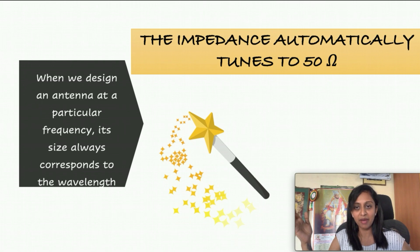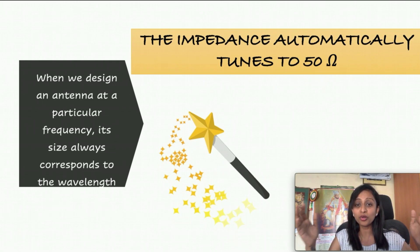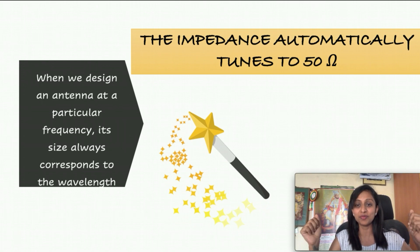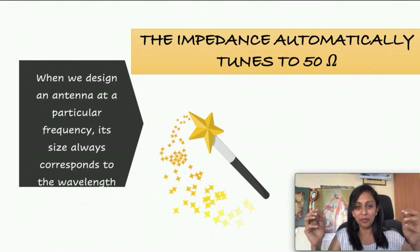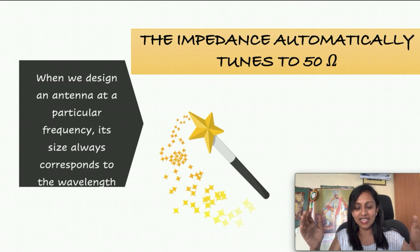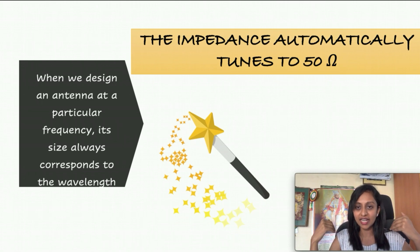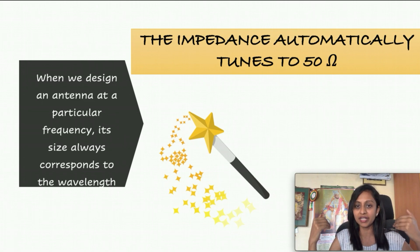When I design antenna dimensions with respect to wavelength, something magic happens: the impedance automatically gets tuned to 50 ohms. All I have to do is design an antenna for the particular frequency at which it needs to operate.